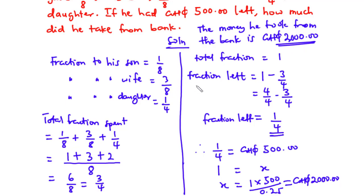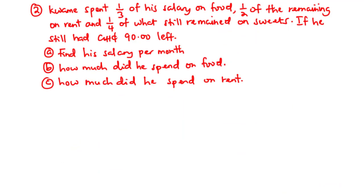Now let's solve our second question. Kwame spent one third of his salary on food, half of the remaining on rent, and one quarter of what still remained on sweets. If he still had 90 Ghana cedis left, find: a) his salary per month, b) how much he spent on food, and c) how much he spent on rent. This question is slightly different — it uses 'a fraction of the remaining', so we can't use the same approach as question one.